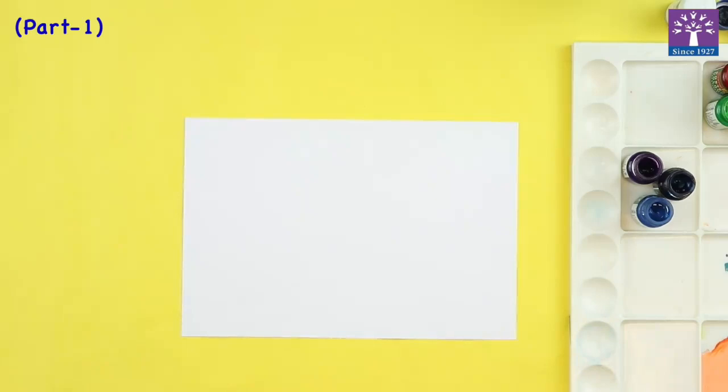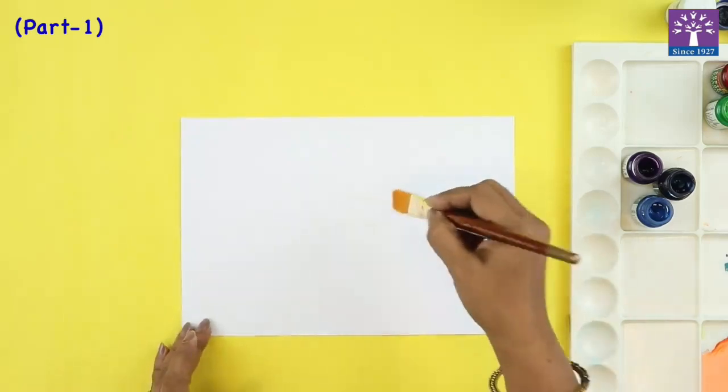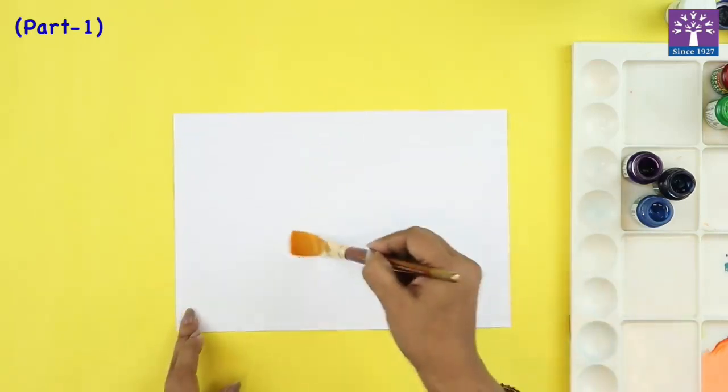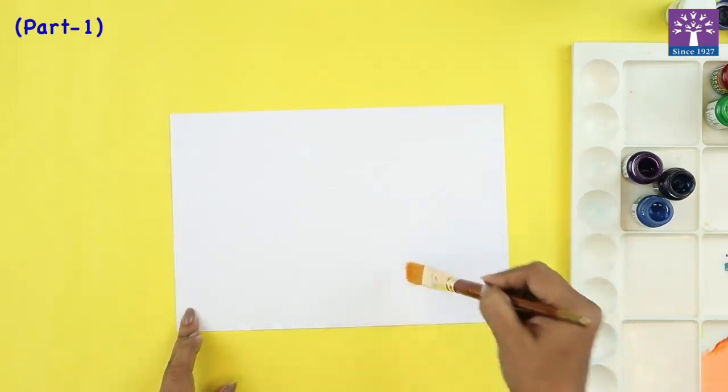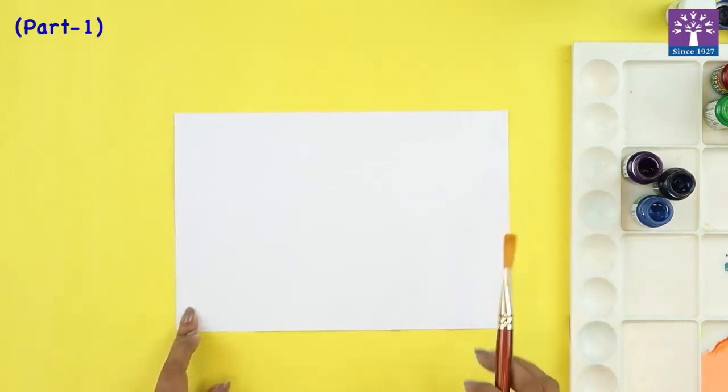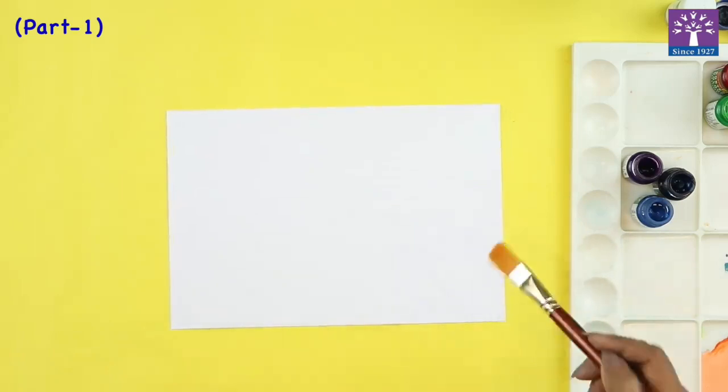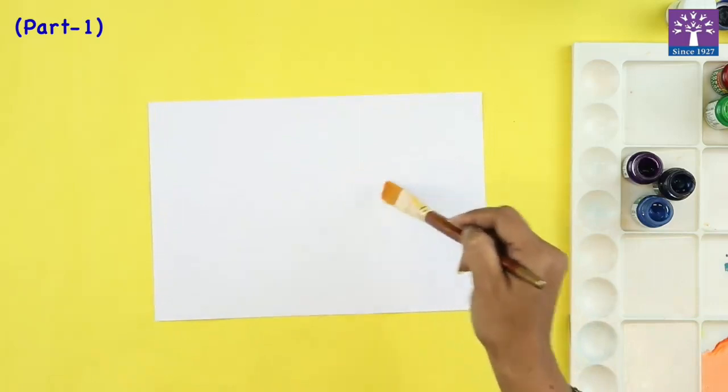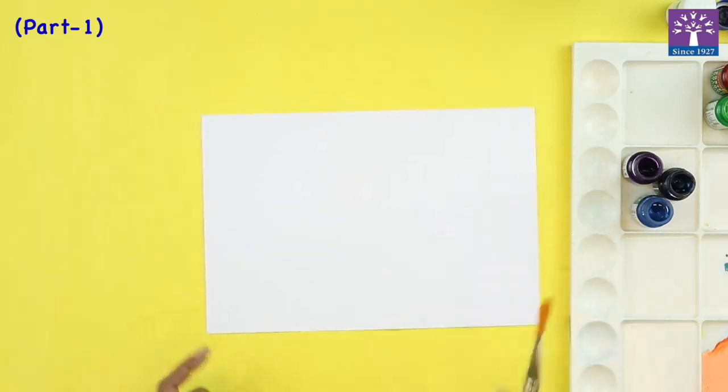Now, Monet's style of painting was, he used to dab the brush like this. He used to dip the brush in the color and dab the brush on the canvas or on the paper and mix the colors while dabbing. He used to use two to three colors and mix it while dabbing. So this is called a dabbing technique. We are going to use this same technique.